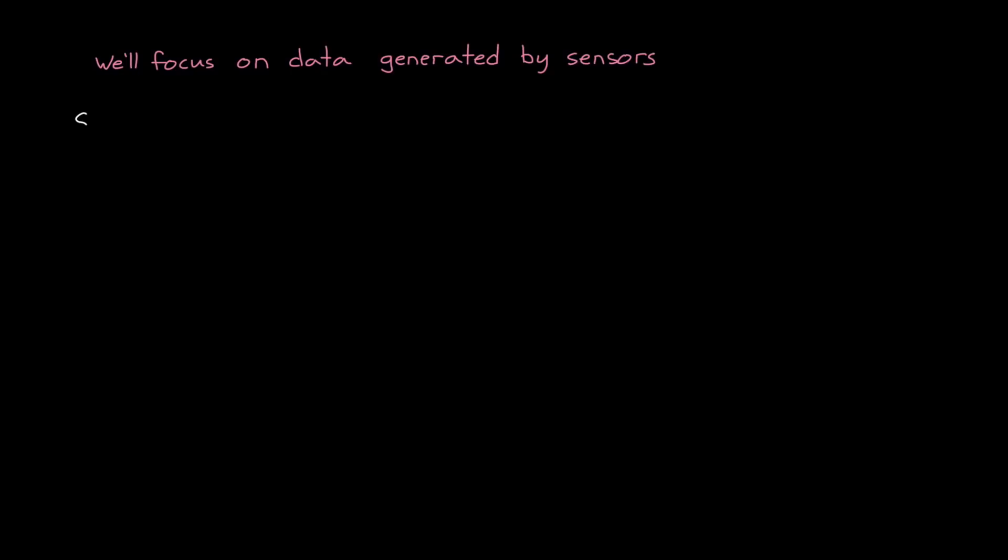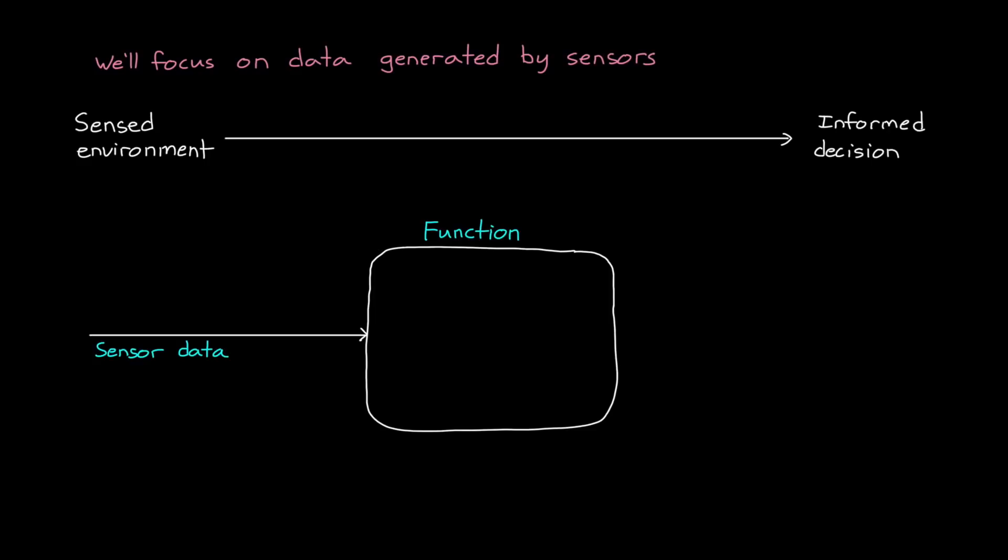Engineers use sensors to measure the environment, and we want to use the measured data to perform some future action. We want to make some informed decision based on what the sensors observe. Therefore, we often need a function, or algorithm, that takes in sensor data and returns something useful.